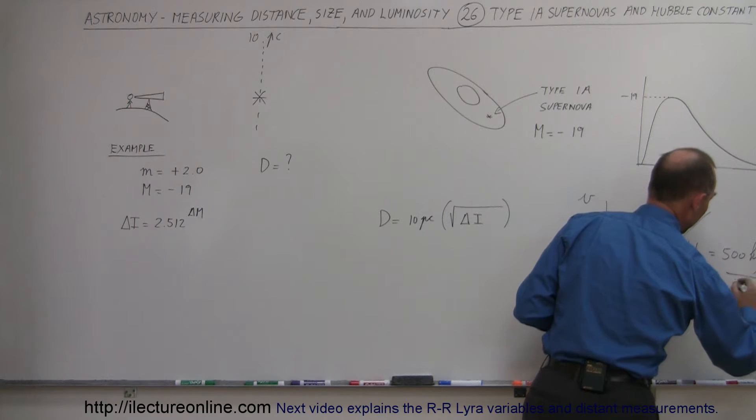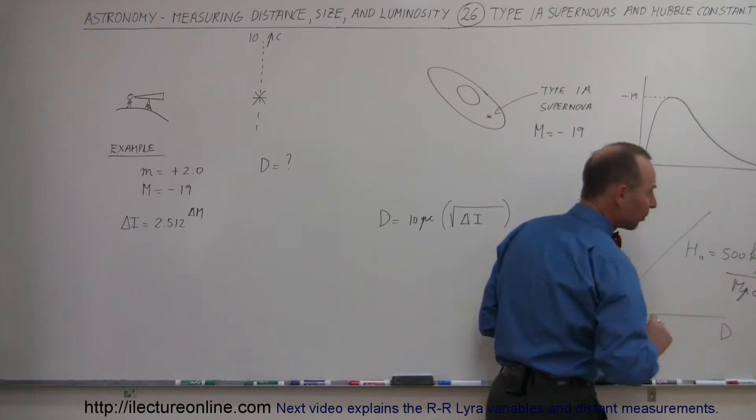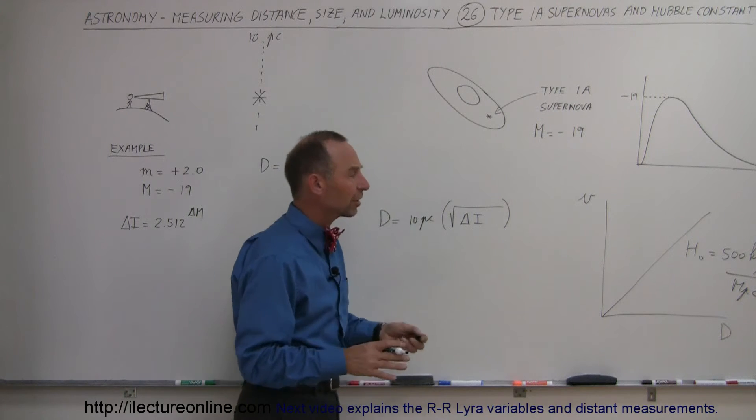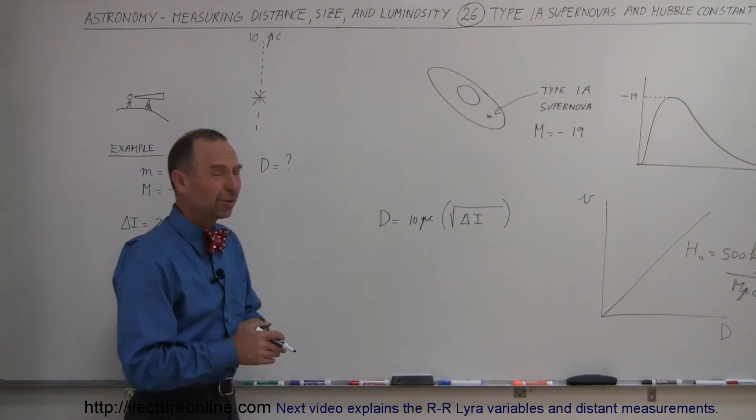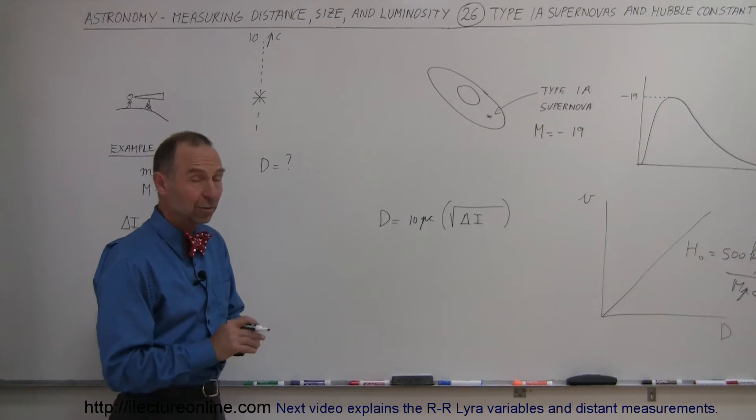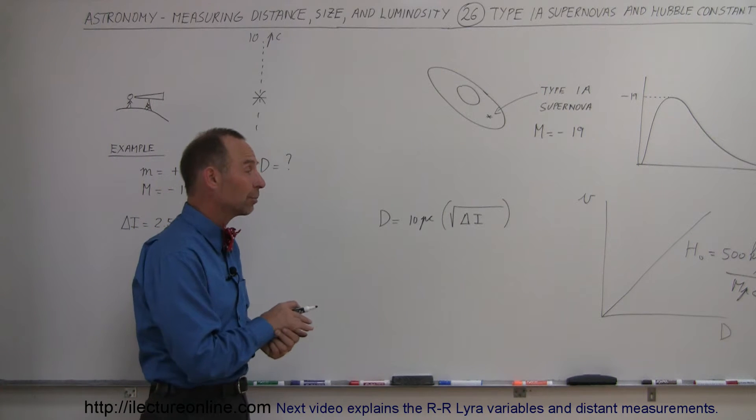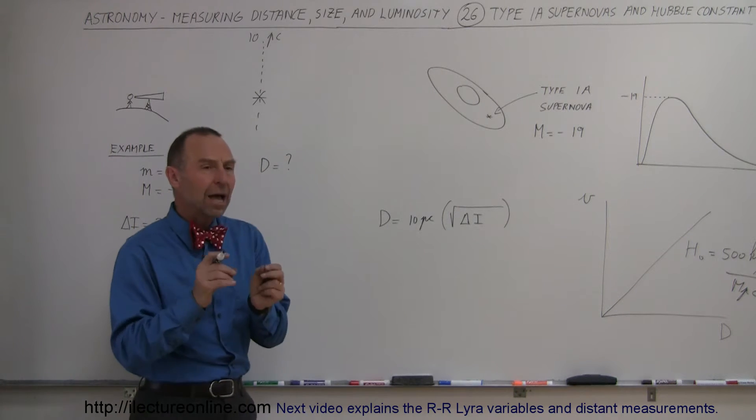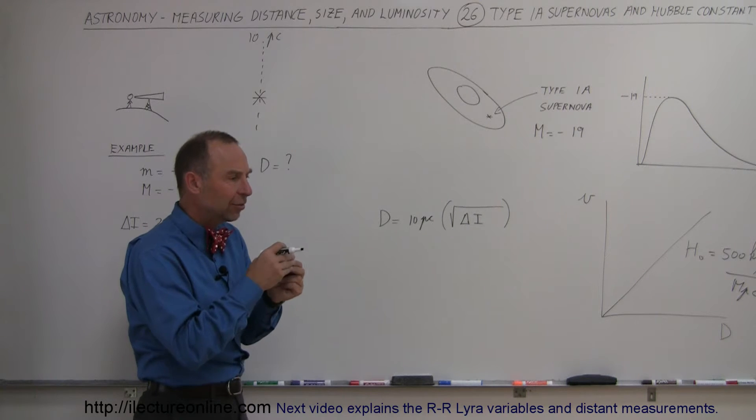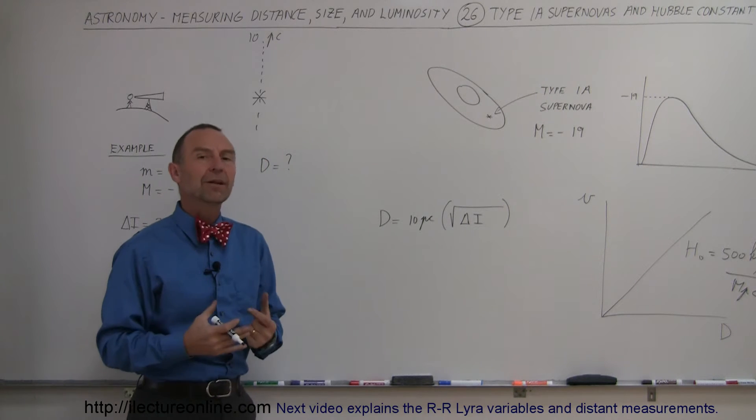That's the value, pretty well what he came up with, about 500 km per second per megaparsec, which was off by a factor of 7 or 8. It's much closer today, as we know, to about 73 km per second per megaparsec, but it all came down to finding a way to find the distance to galaxies in an independent fashion.